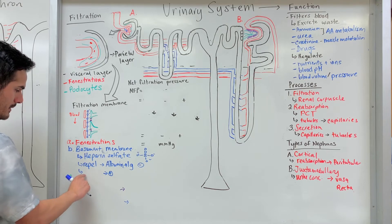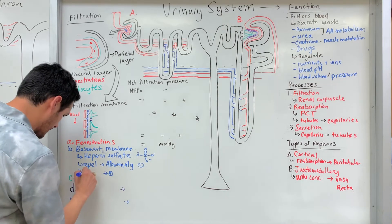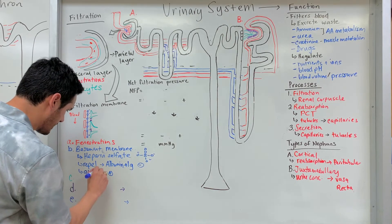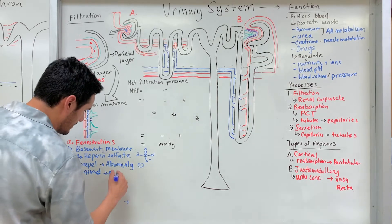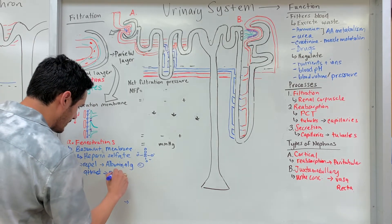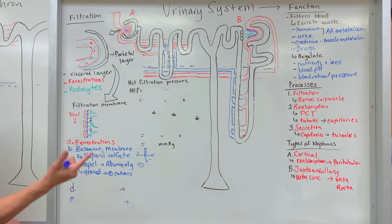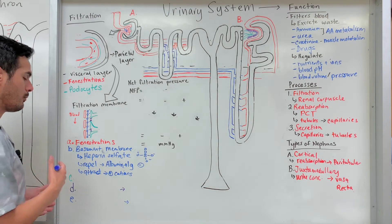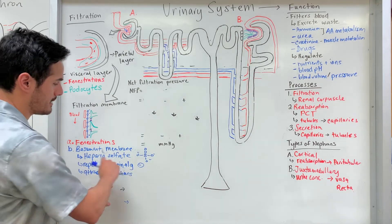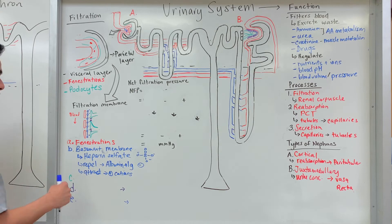The negative charge also attracts things that are positively charged — specifically cations like the electrolytes: sodium, calcium, potassium. These positively charged things pass through more easily because they're attracted to the negatively charged basement membrane.